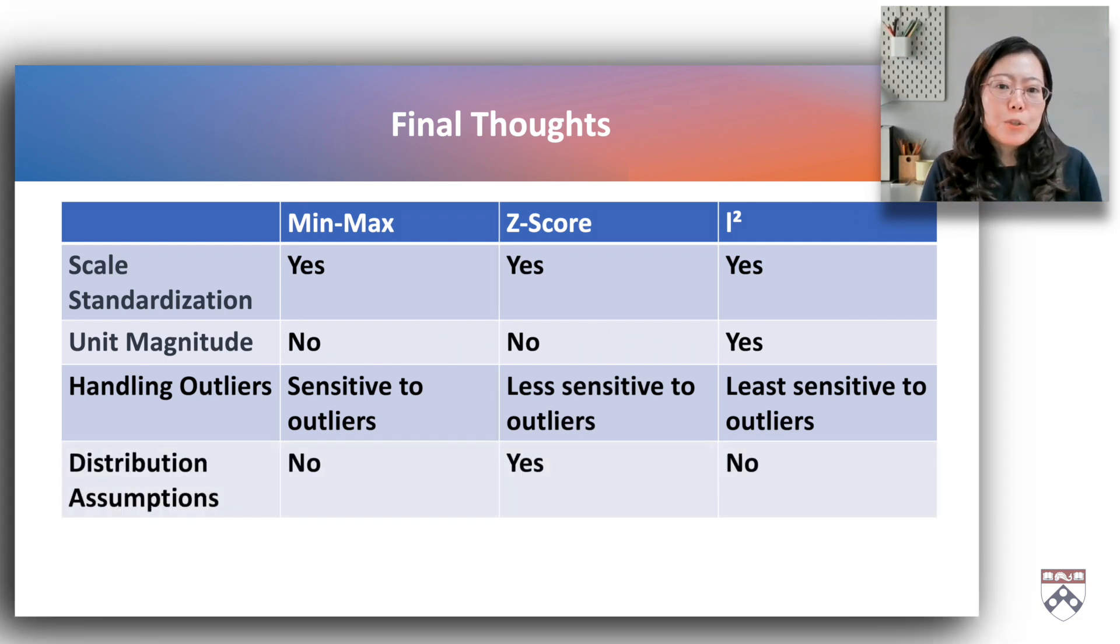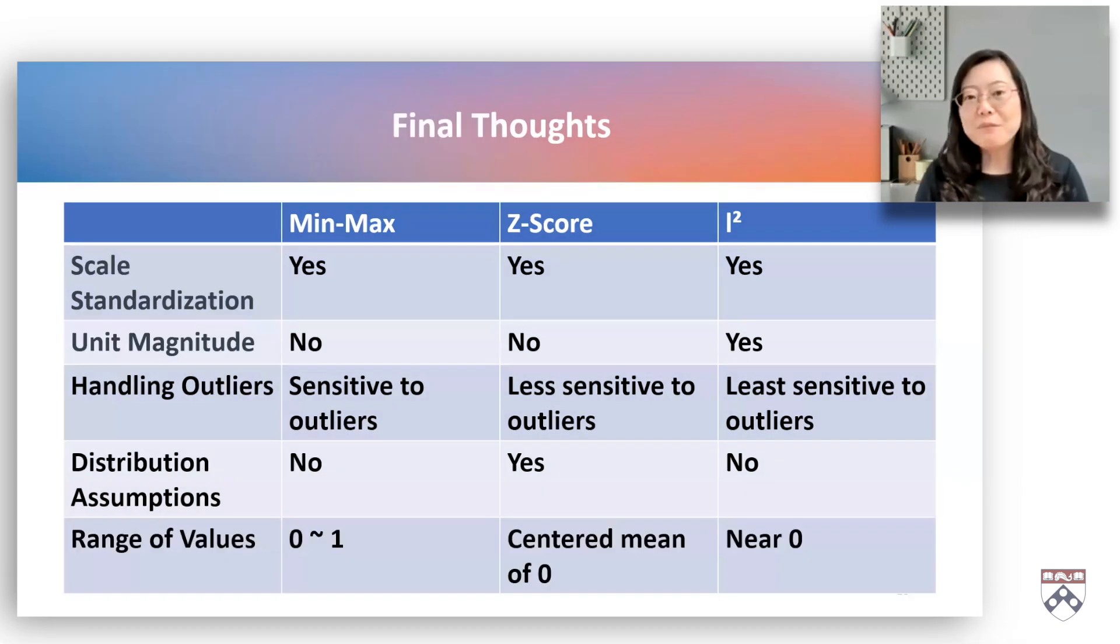Distribution assumptions: z-score normalization assumes a normal distribution of data, making it suitable for normally distributed variables. Min-max normalization and L2 normalization do not assume a specific distribution and are more versatile in various scenarios. Range of values: min-max normalization constrains values to a specific range, such as between 0 and 1, making it suitable for scenarios where a bounded scale is desired. Z-score normalization centered mean of 0, whereas L2 normalization is closer to 0.